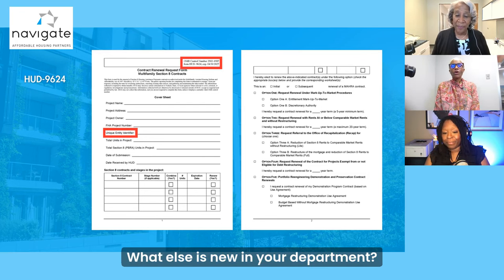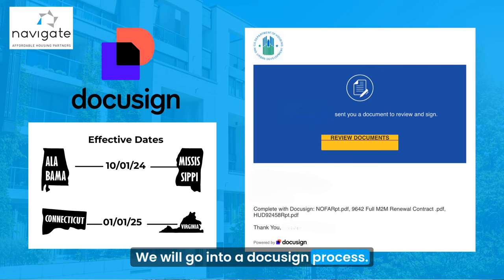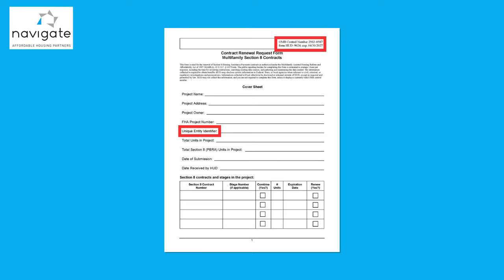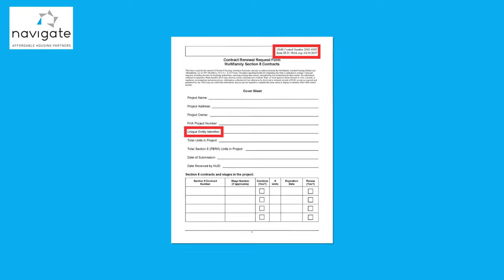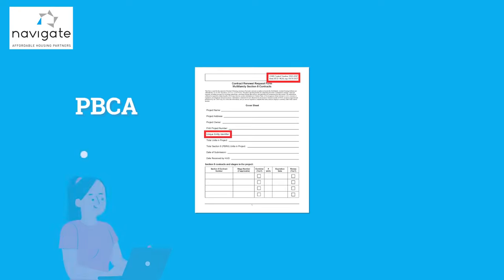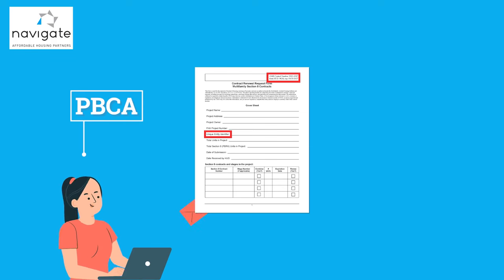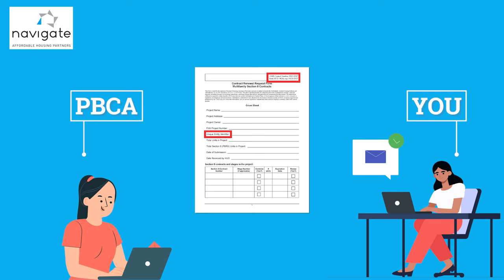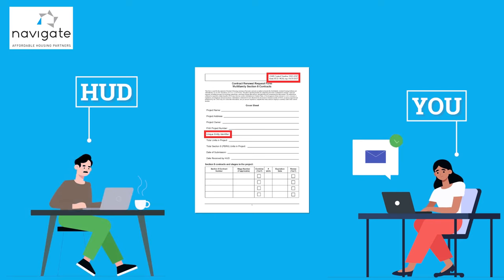What else is new in your department? All contracts will be signed through a DocuSign process through HUD. In the past, we as the PPCA would send you the contracts to sign and we would start off the signature process. That has changed, effective 1-1. All of your contract paperwork — your contract and your rent schedule — that process will be initiated through HUD.